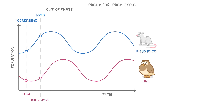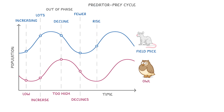Once the owl population gets too high though, it starts to cause a decline in the mouse population, because the mice are suddenly all being eaten. Because there are now fewer mice, and so less food for the owls, the owl population starts to decline as well. And this in turn will allow the mouse population to rise again, meaning that we're back to where we started, and the cycle will just repeat again and again.